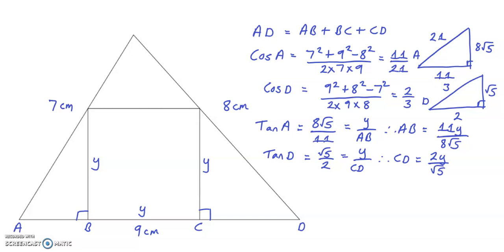So going back to the first equation I wrote, AD is 9 equals AB, 11Y over 8 root 5 plus Y that's BC plus CD which is 2Y over root 5.